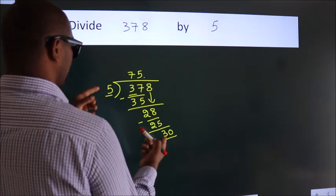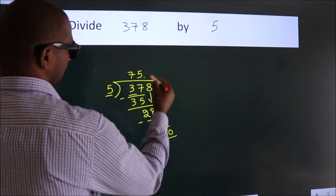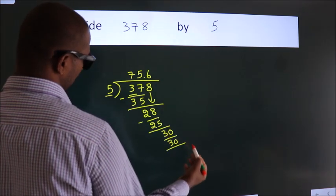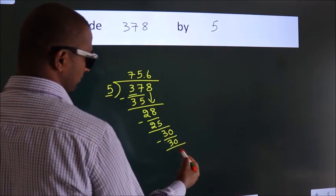When do we get 30 in the 5 table? 5 times 6 equals 30. Now we subtract. We get 0.